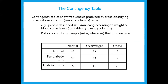The contingency table is called R-by-C — rows by columns — and here we have a 3×3. This will be the last time I'll mention more than 2×2, but what you put in the data table are counts. You don't put medians or P-values. In your study you observed, for example, that 47 people had normal BMI and normal serum glucose, and 25 people were obese with diabetic levels. The sum of all numbers is your total sample size.